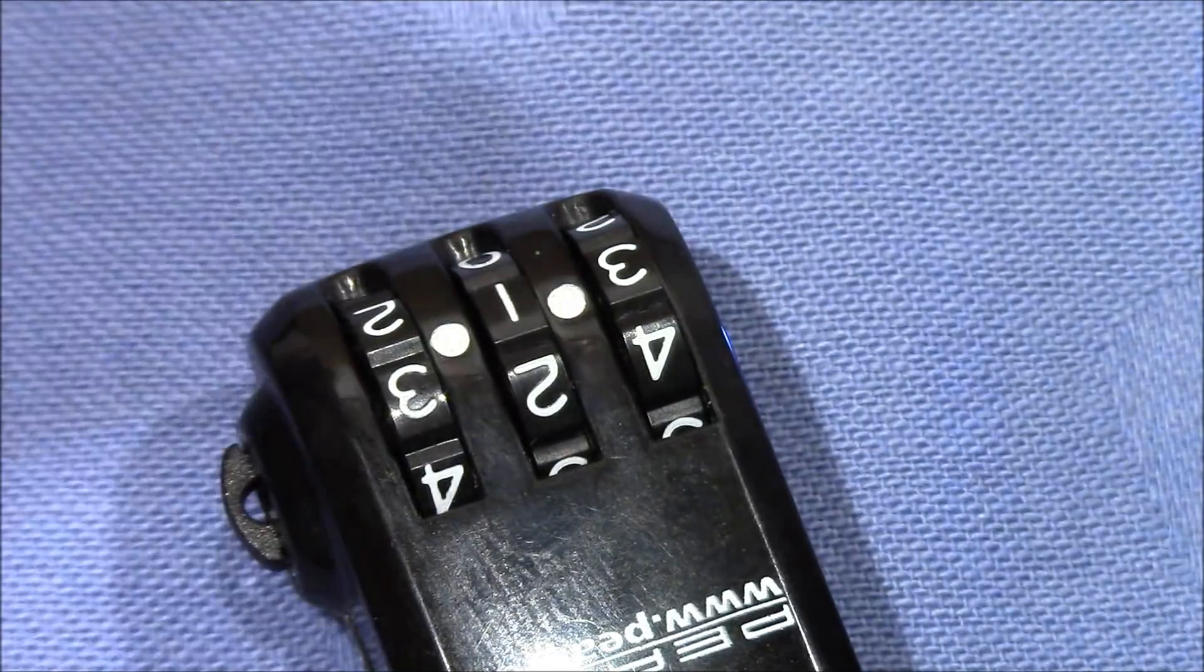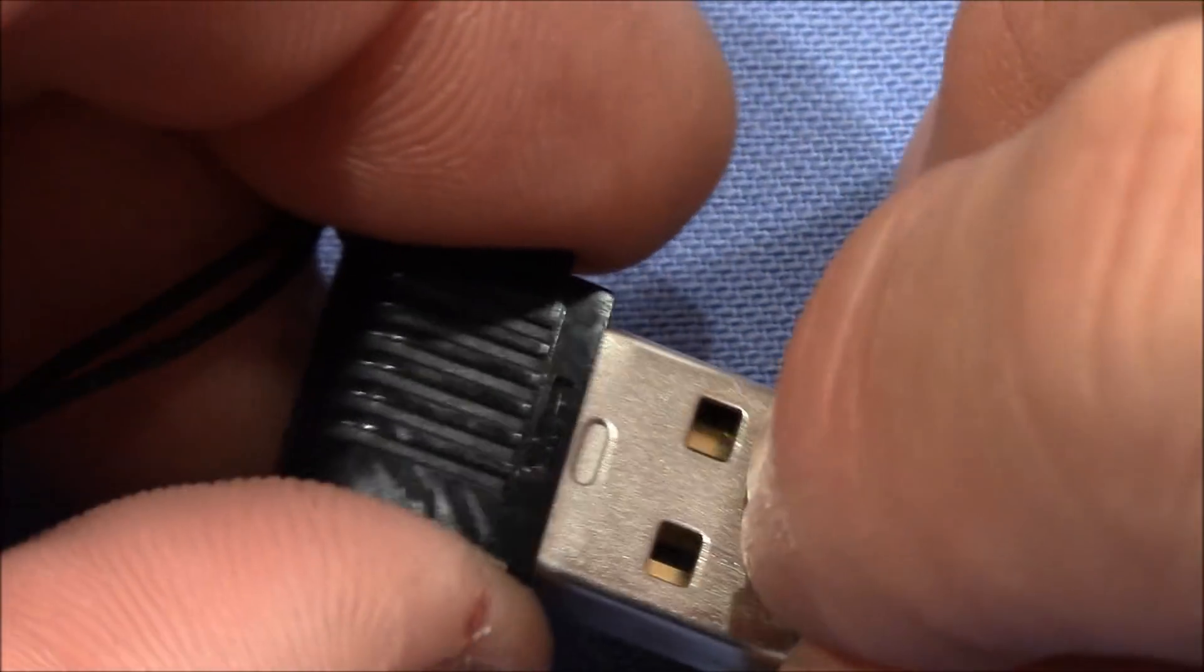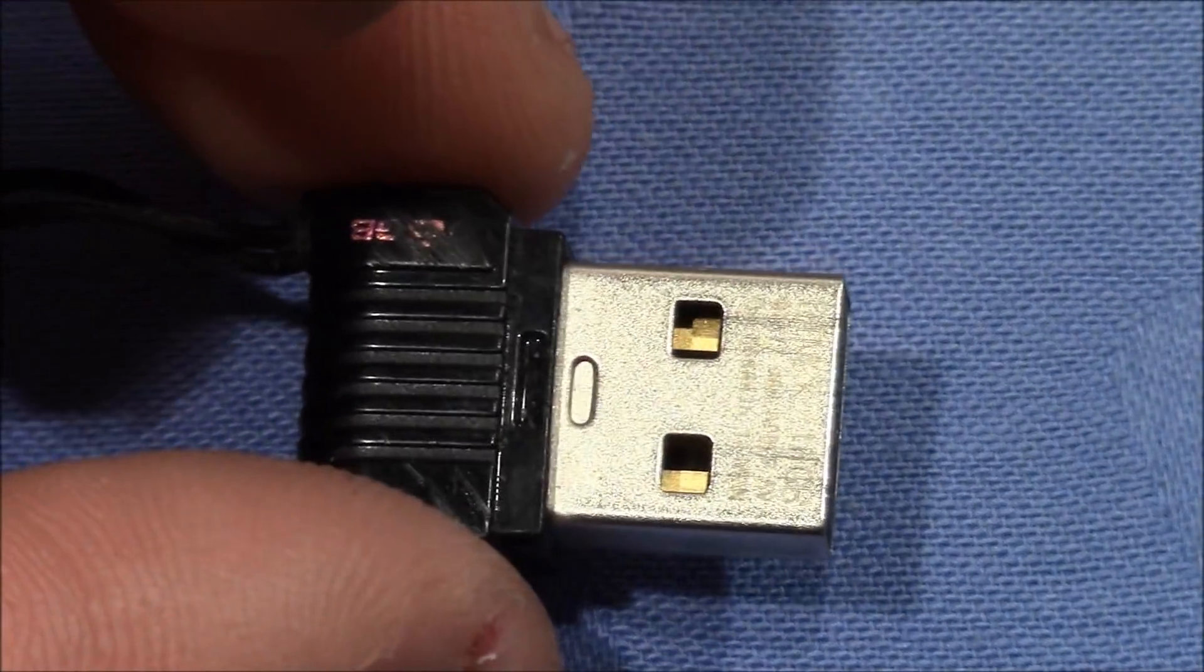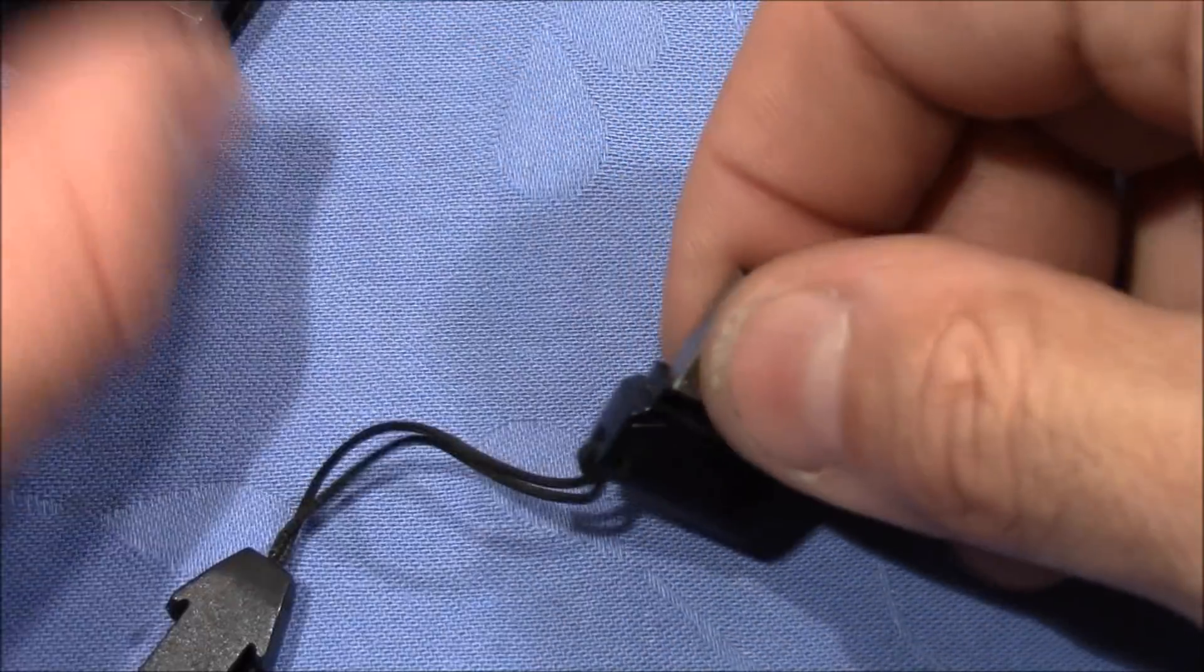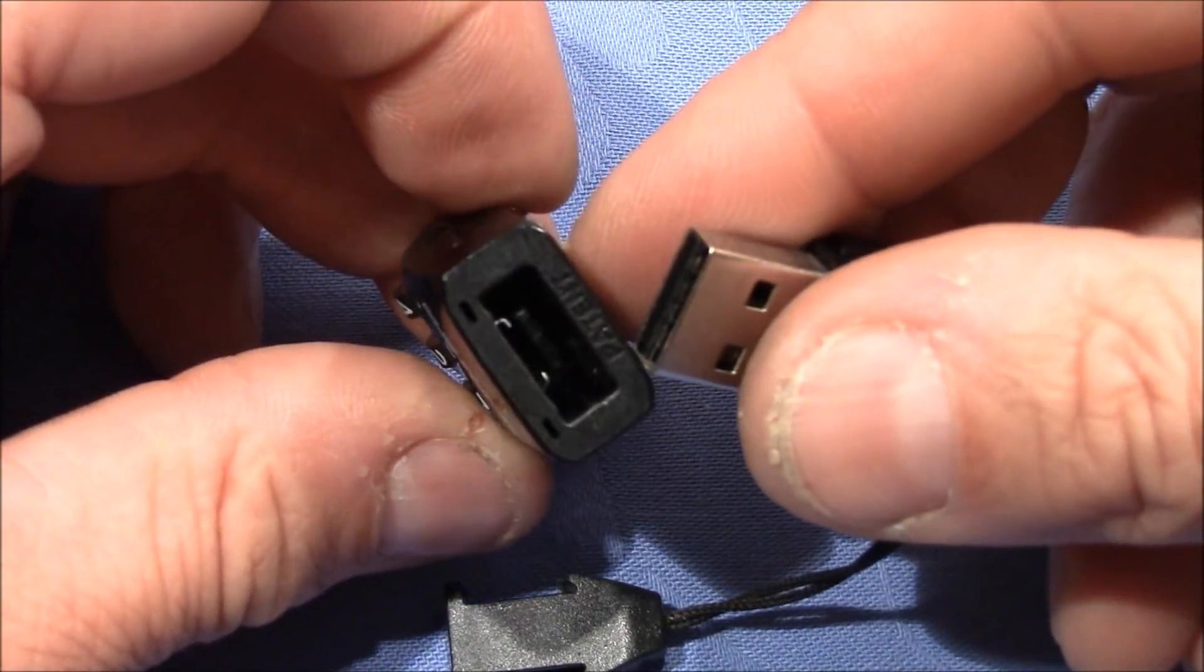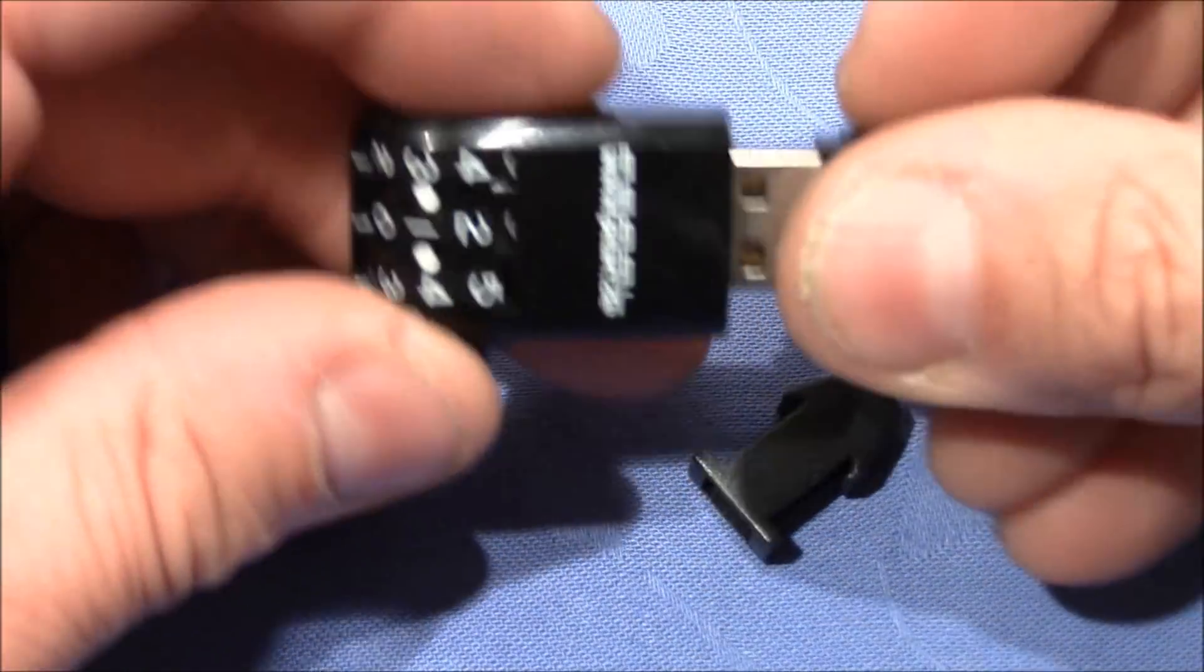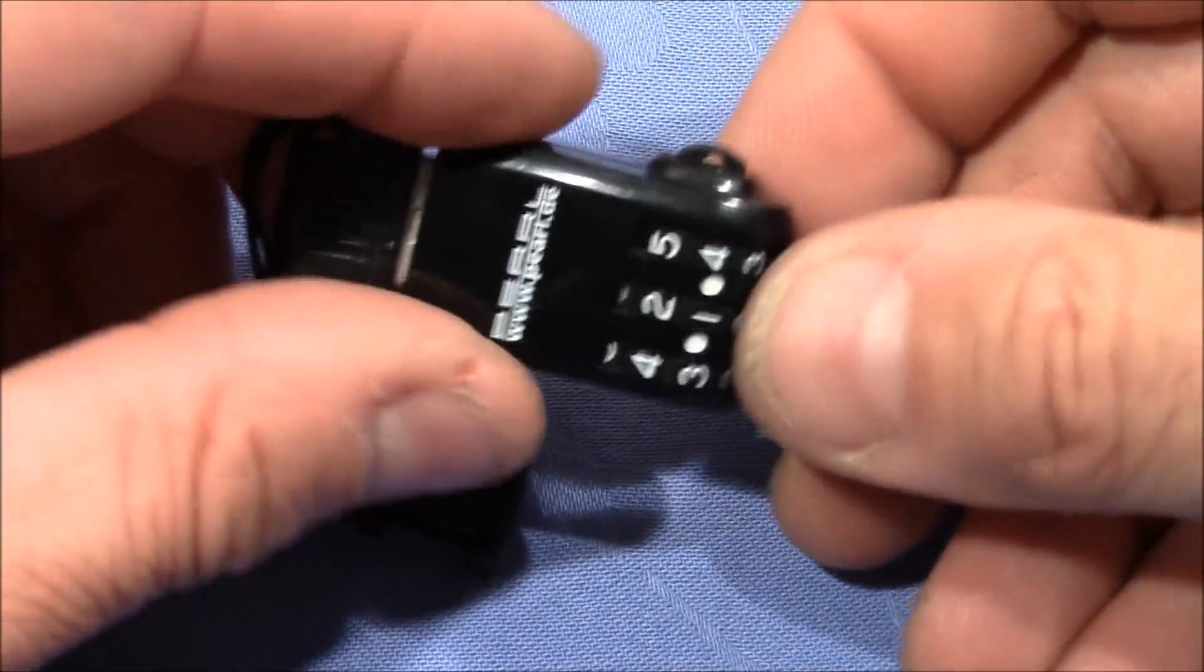The USB stick has two holes where these two prongs go in, which prevents the USB stick from coming out again. But if pulling is not possible, we can still try to decode the lock.